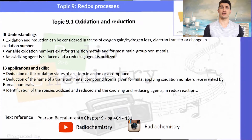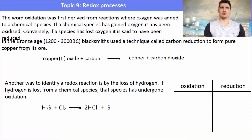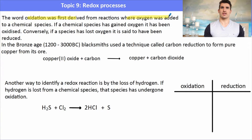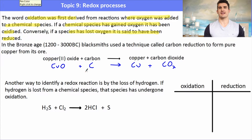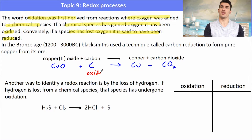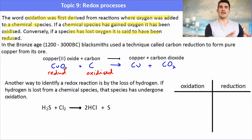The word oxidation was first derived from reactions where oxygen was added to a chemical species. If a chemical species has gained oxygen, it has been oxidized. In reverse, if a species has lost oxygen, it has been reduced. Reduction and oxidation together give us the word redox. For example, copper oxide reacting with carbon produces copper and carbon dioxide. The copper oxide lost its oxygen, so it was reduced; the carbon gained an oxygen to form carbon dioxide, so it was oxidized.